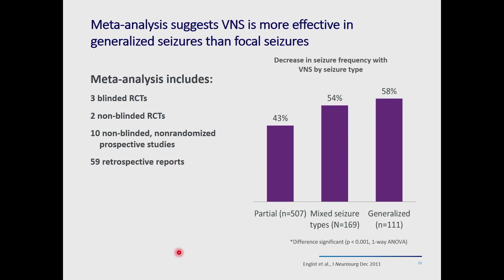A meta-analysis showed that the VNS may be more effective in people who have generalized seizures than focal seizures. This pooled study of randomized controlled and non-blinded trials found a difference between focal, mixed, and generalized seizures, suggesting people with generalized seizures had a better response.